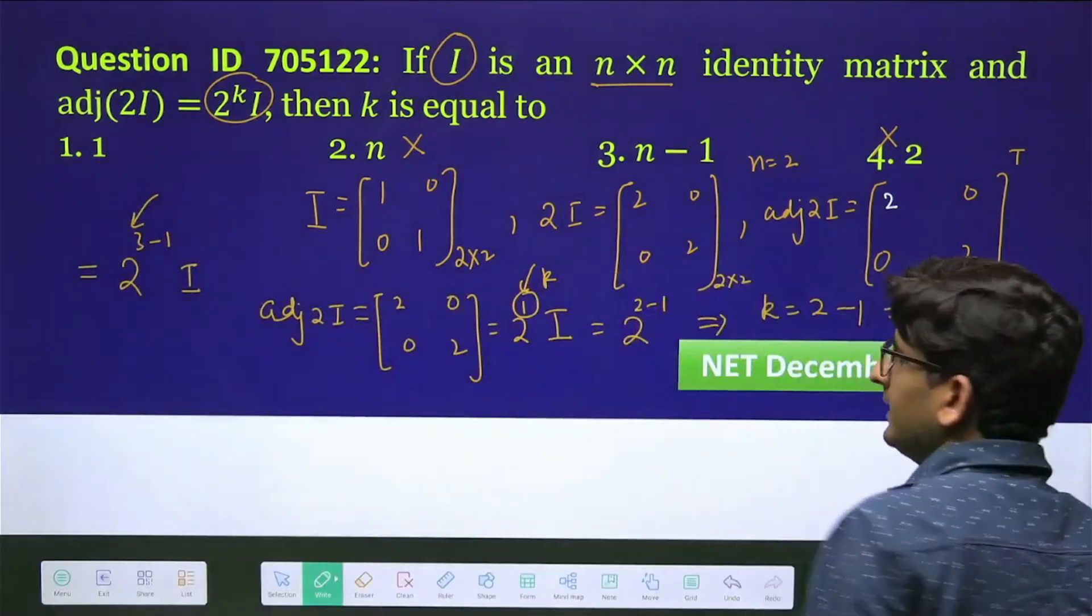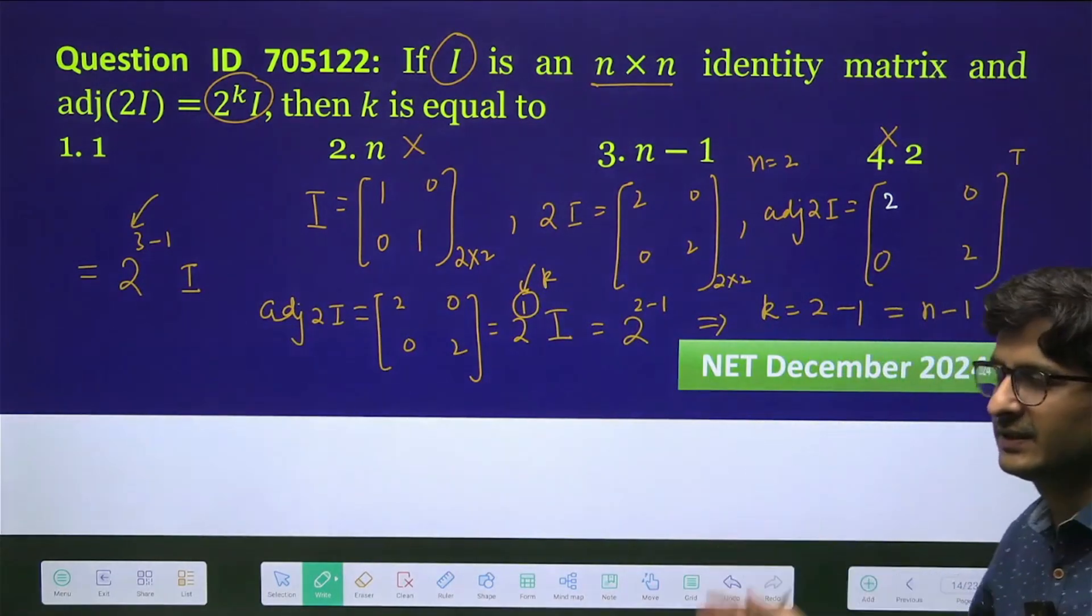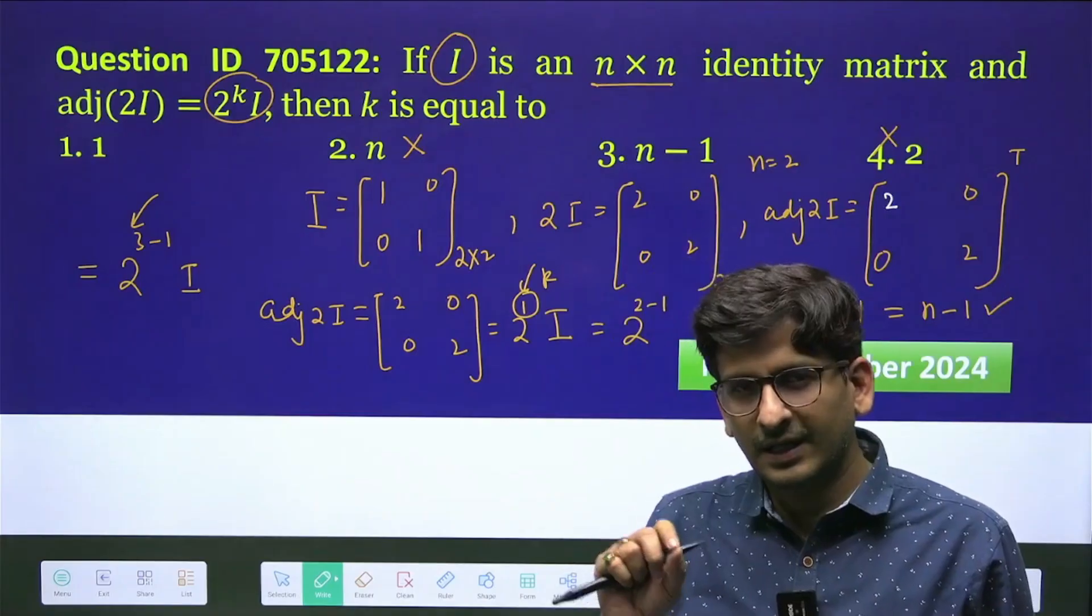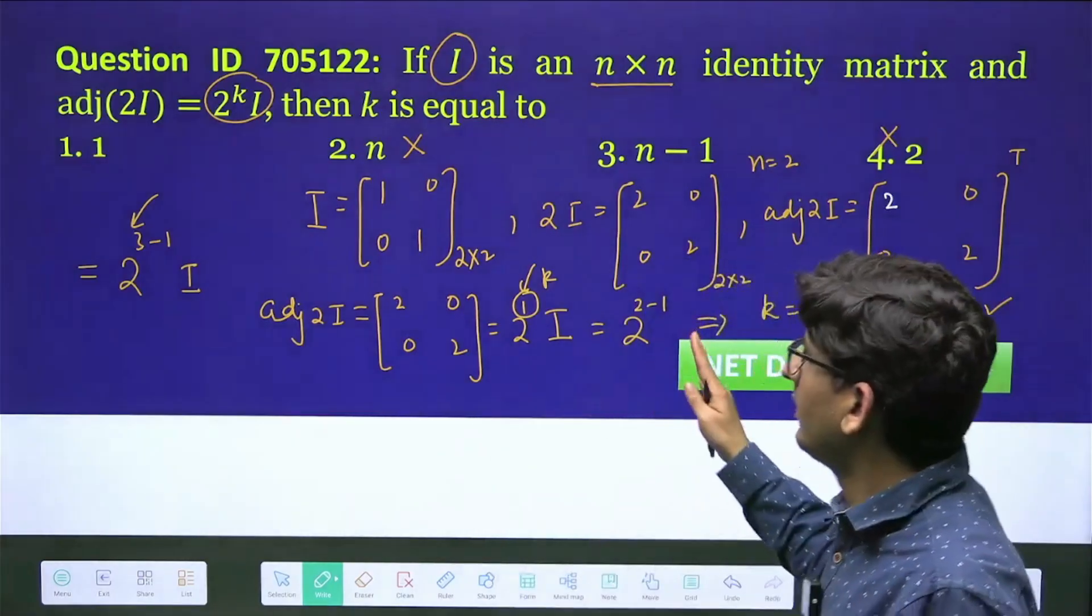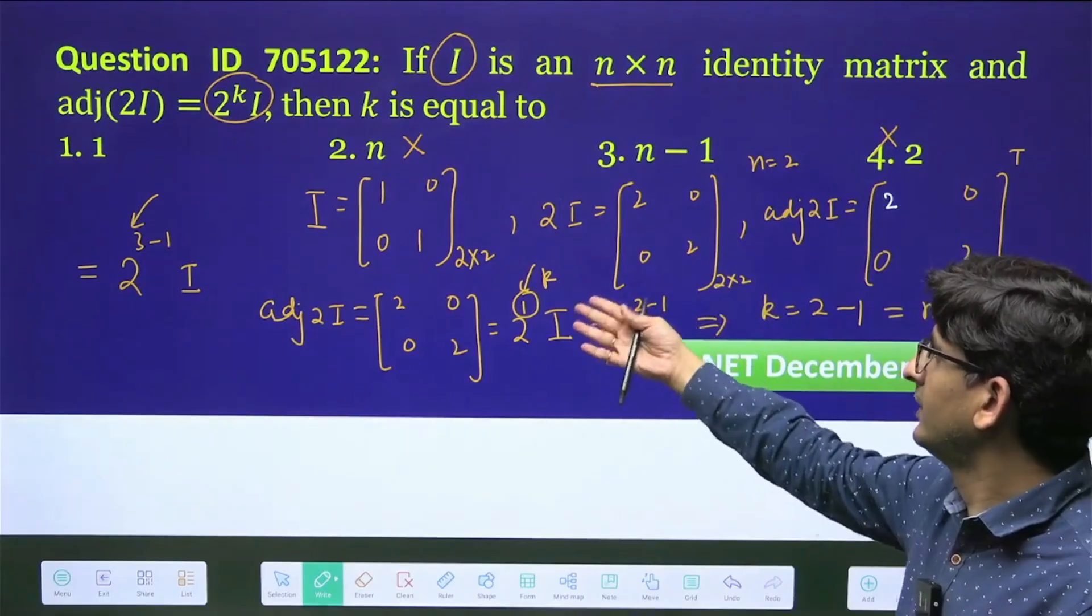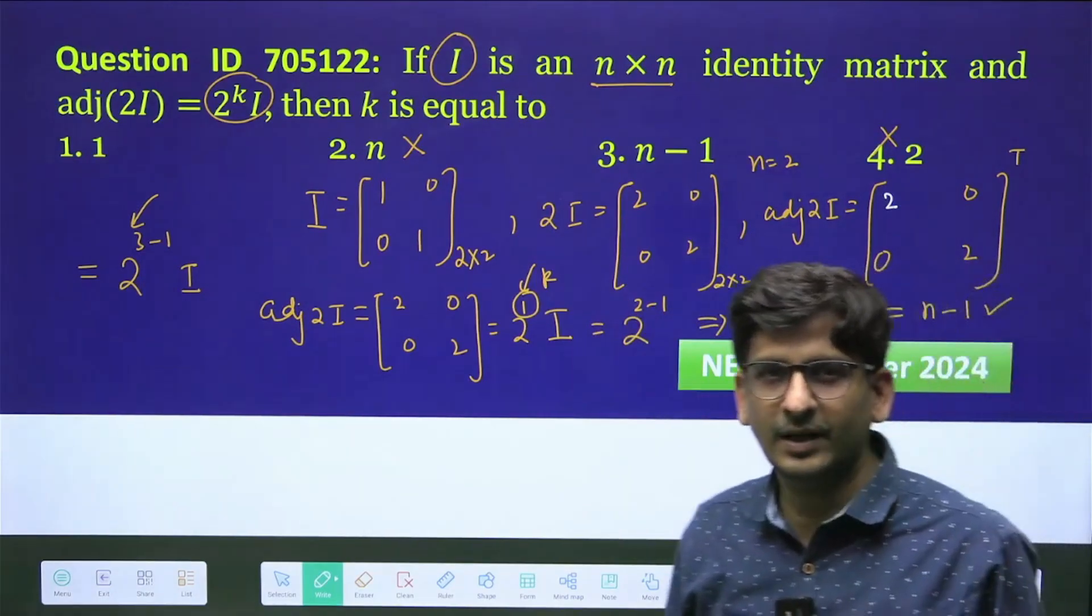So that's why this option C is correct. So such questions can be very easily done using your knowledge of just eliminating the options and taking some particular matrix and just trying to see which one of the options can be correct. Thank you so much.